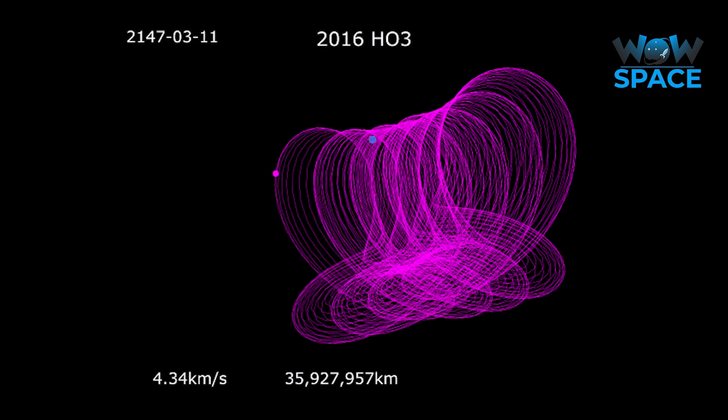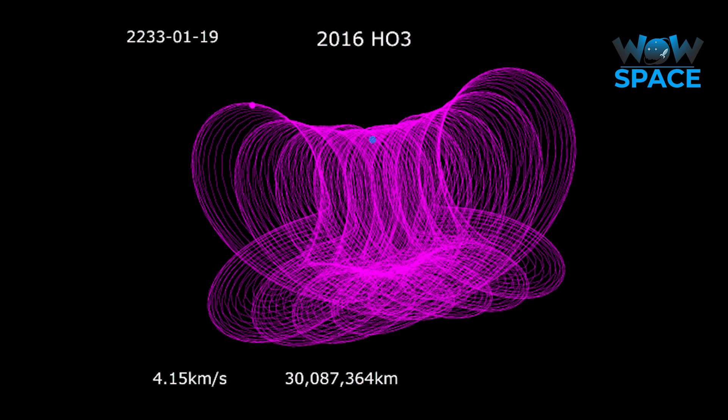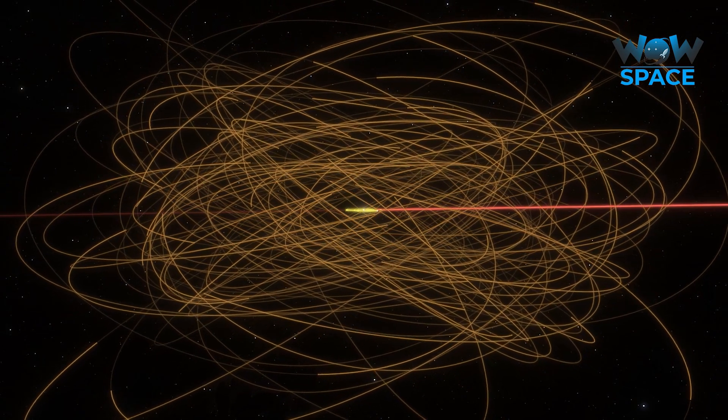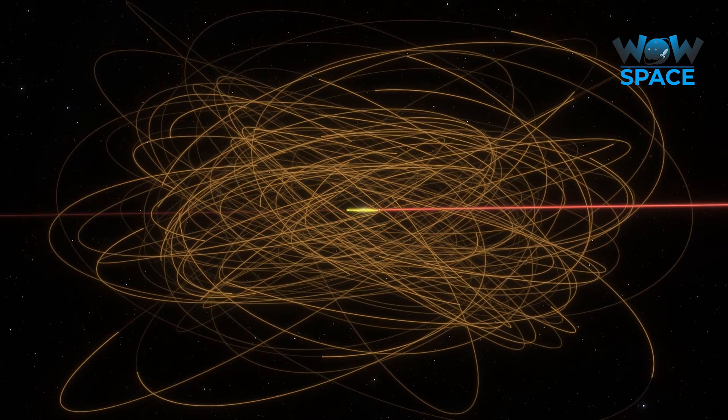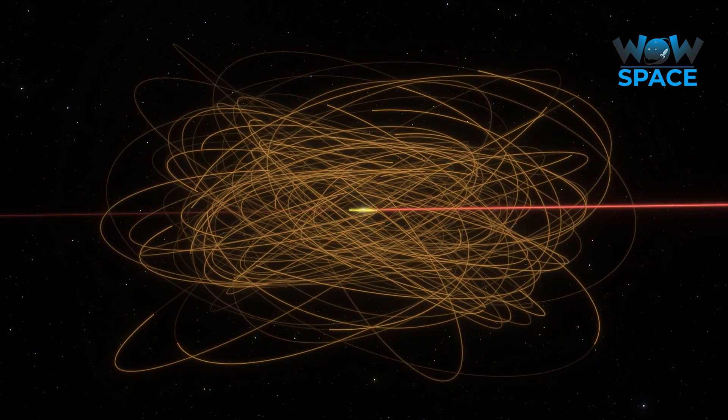We aren't the only planet to have quasi-satellites, in fact they all might, considering these objects are very difficult to spot. But why do gas giants have so many irregular moons, and Earth only has the one, right now anyway?